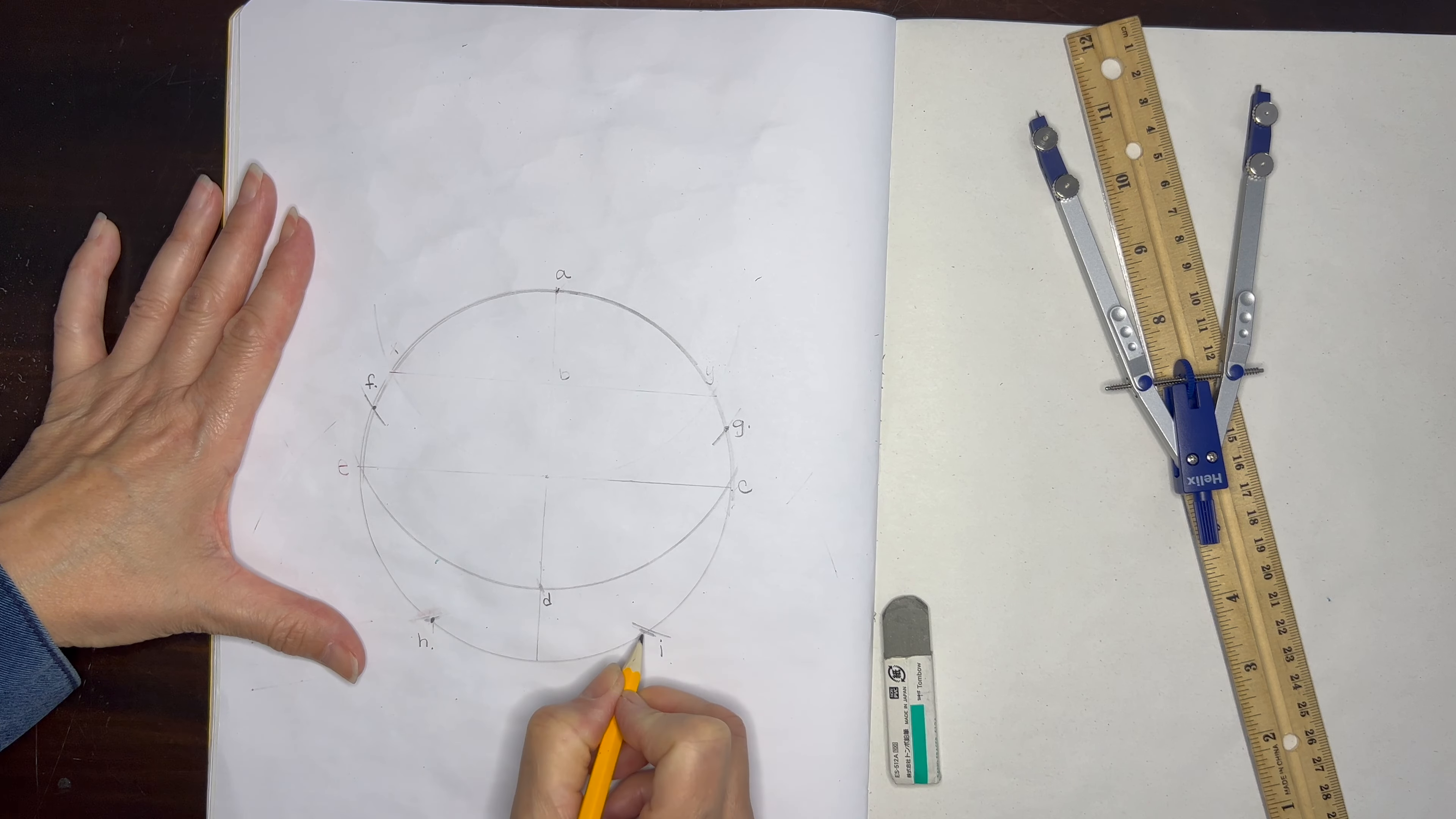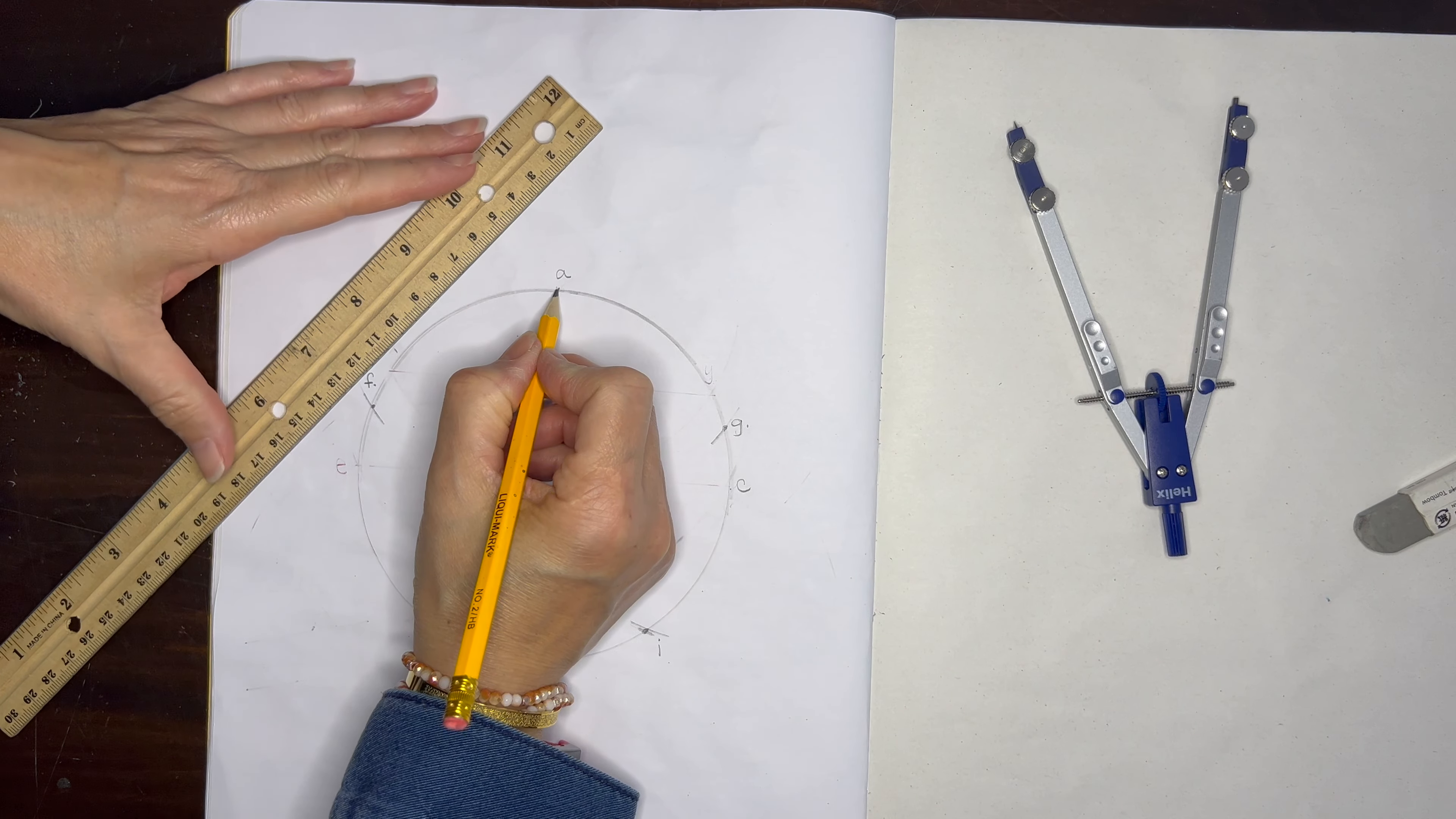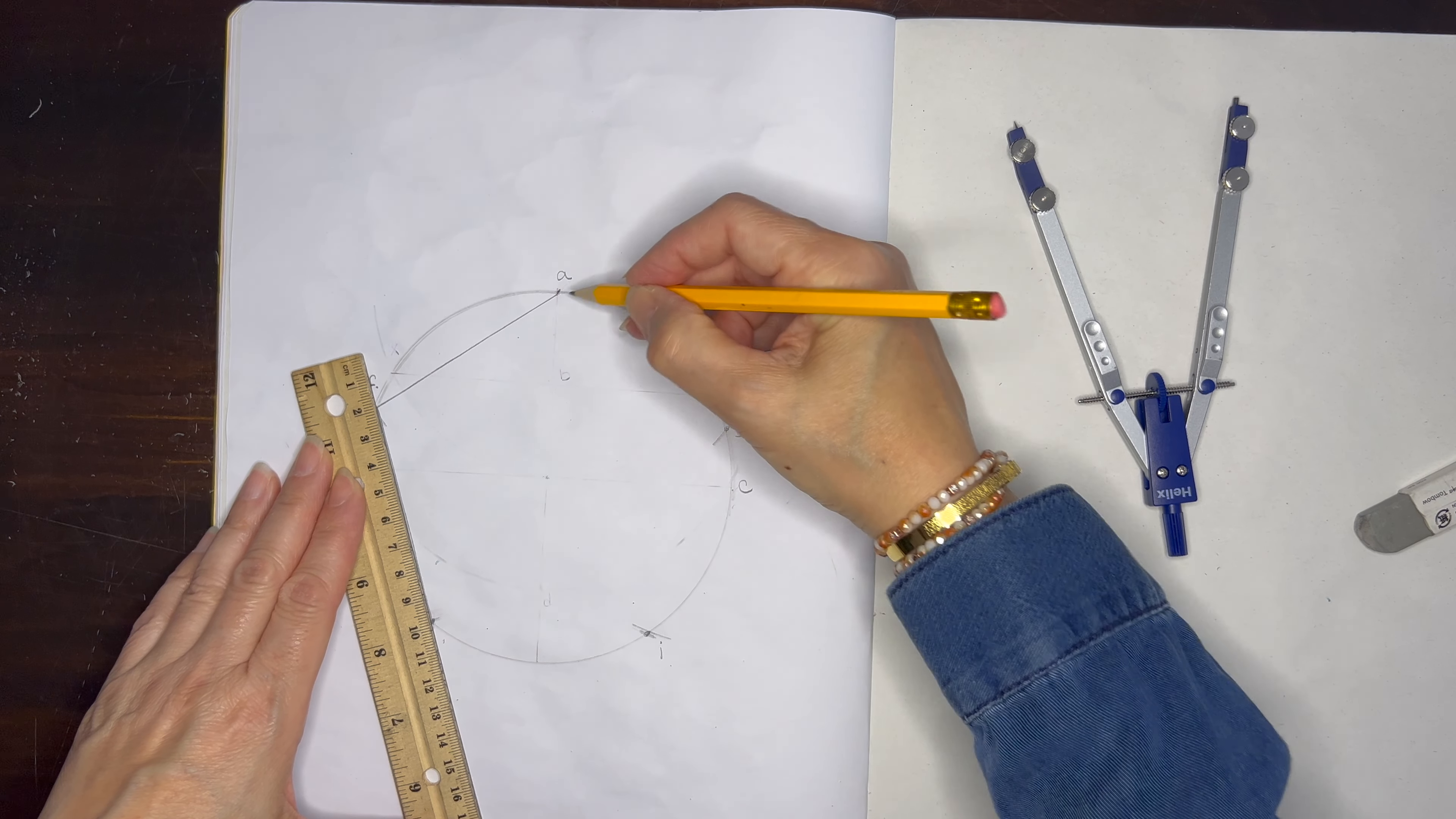So we can label each of those arcs and erase any of the extra marks that you have on your page. Now we can use our straight edge to connect all of these points, and in this way you will see your five division of a circle and the pentagon that you can inscribe inside the circle.